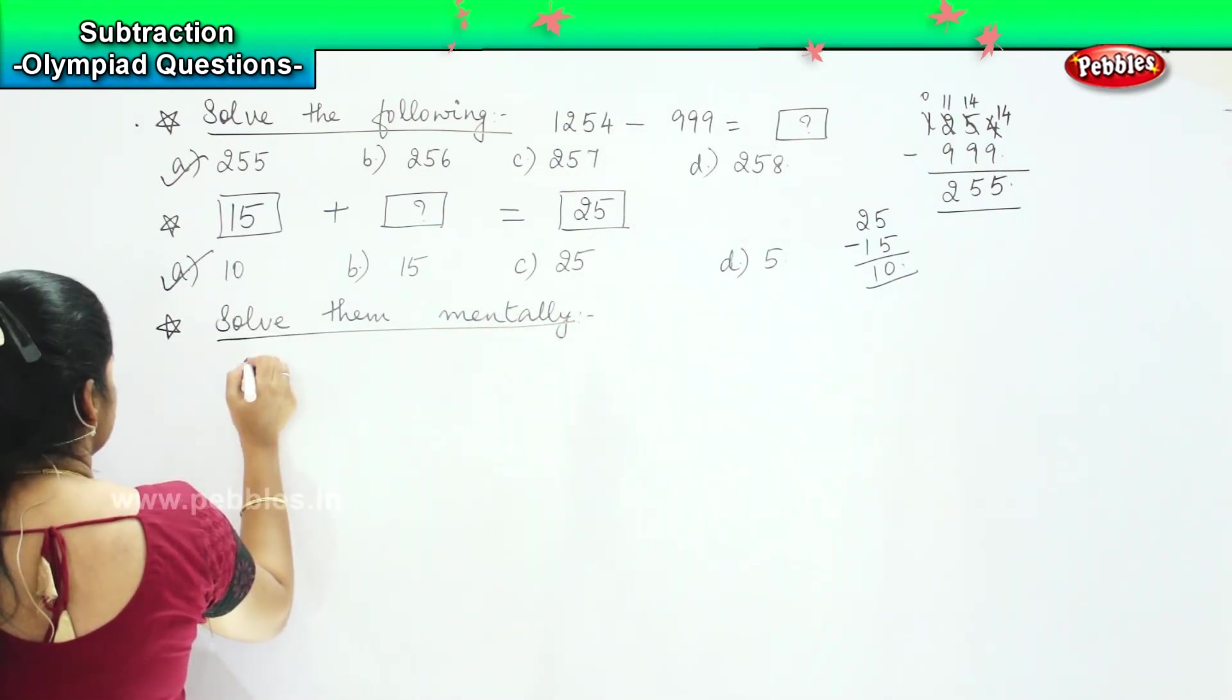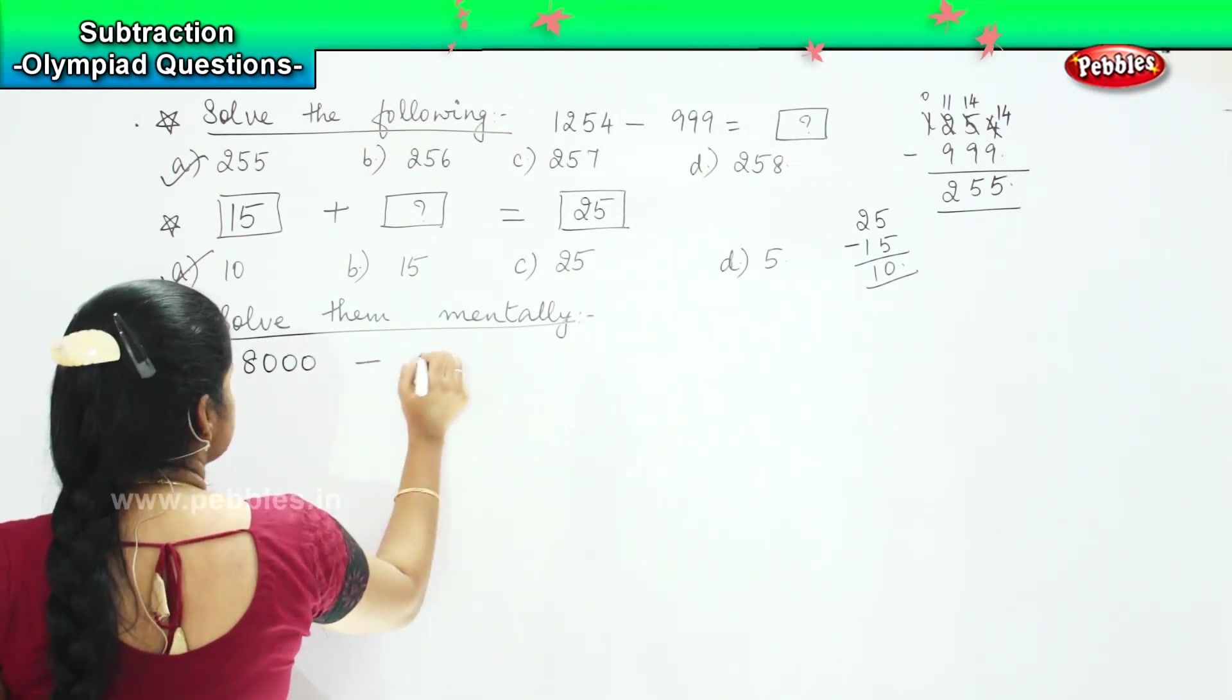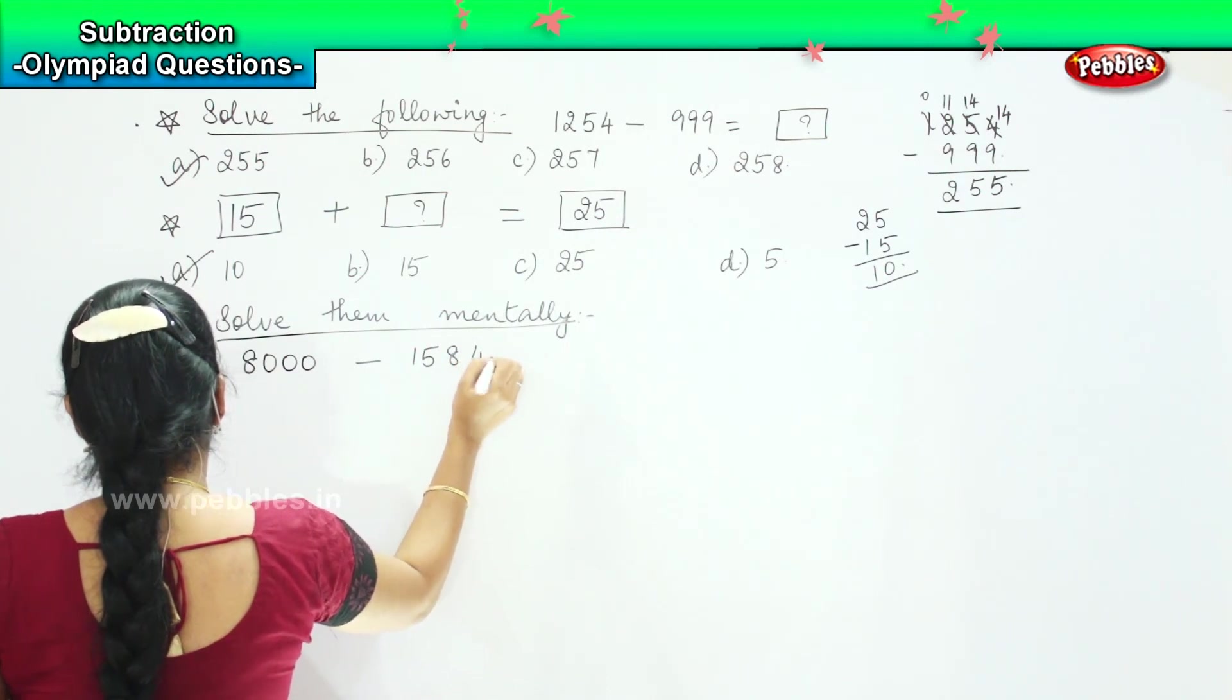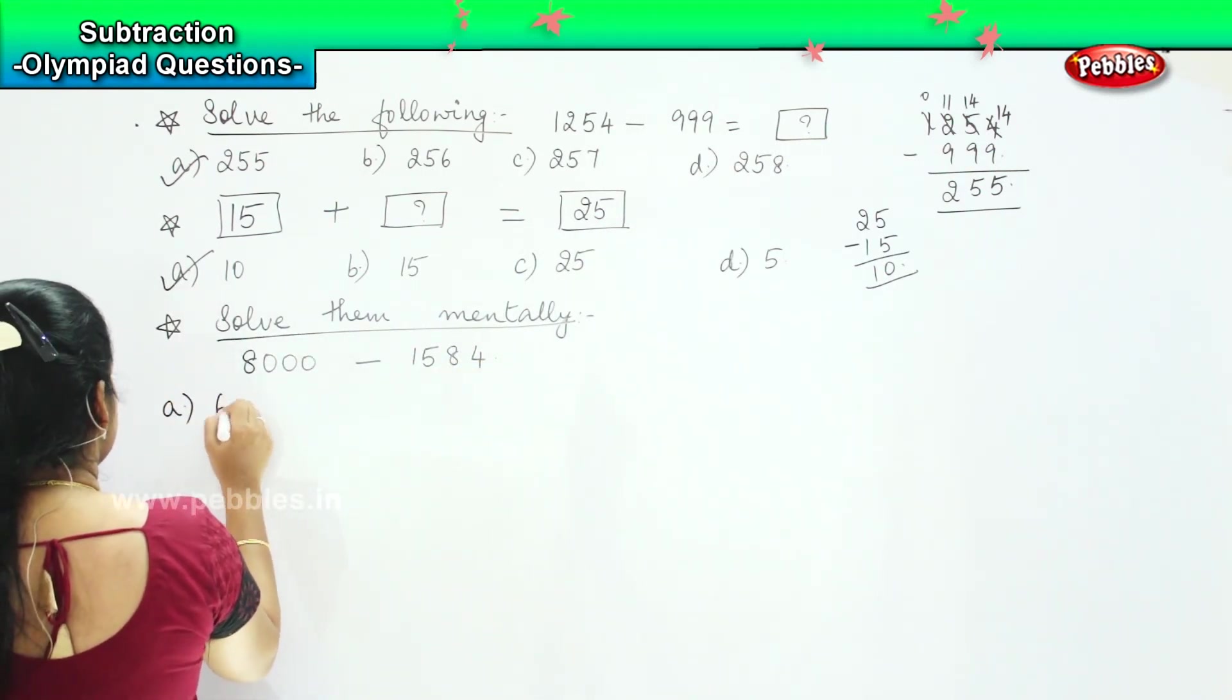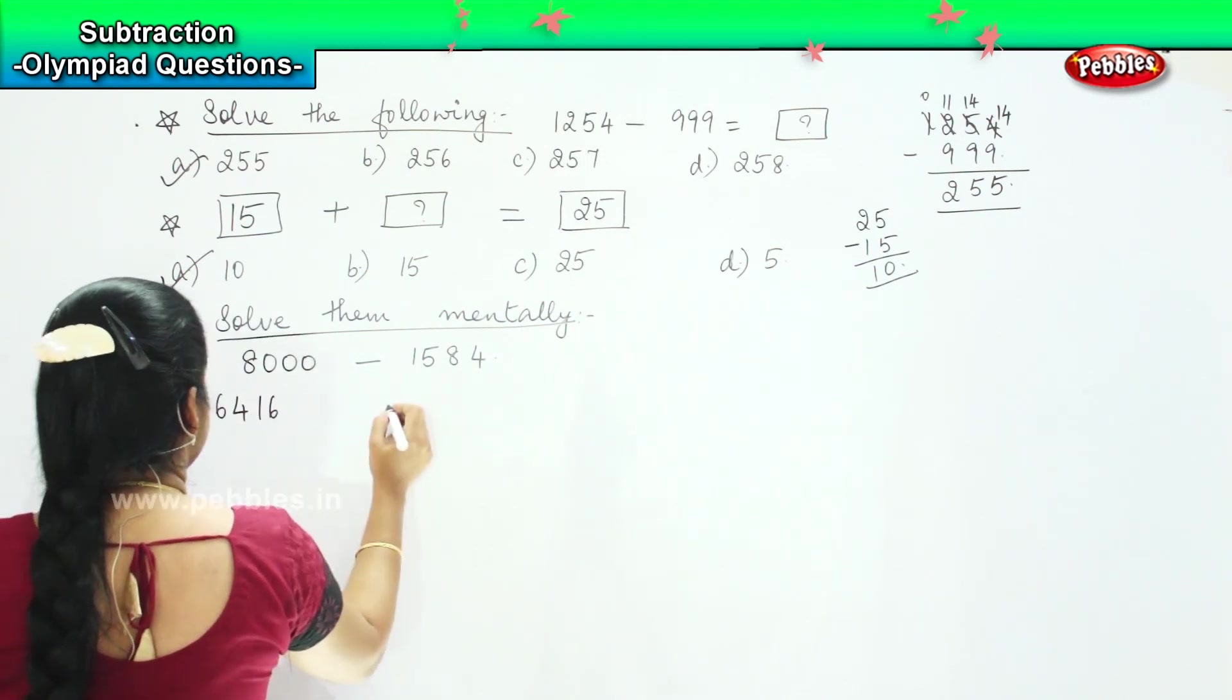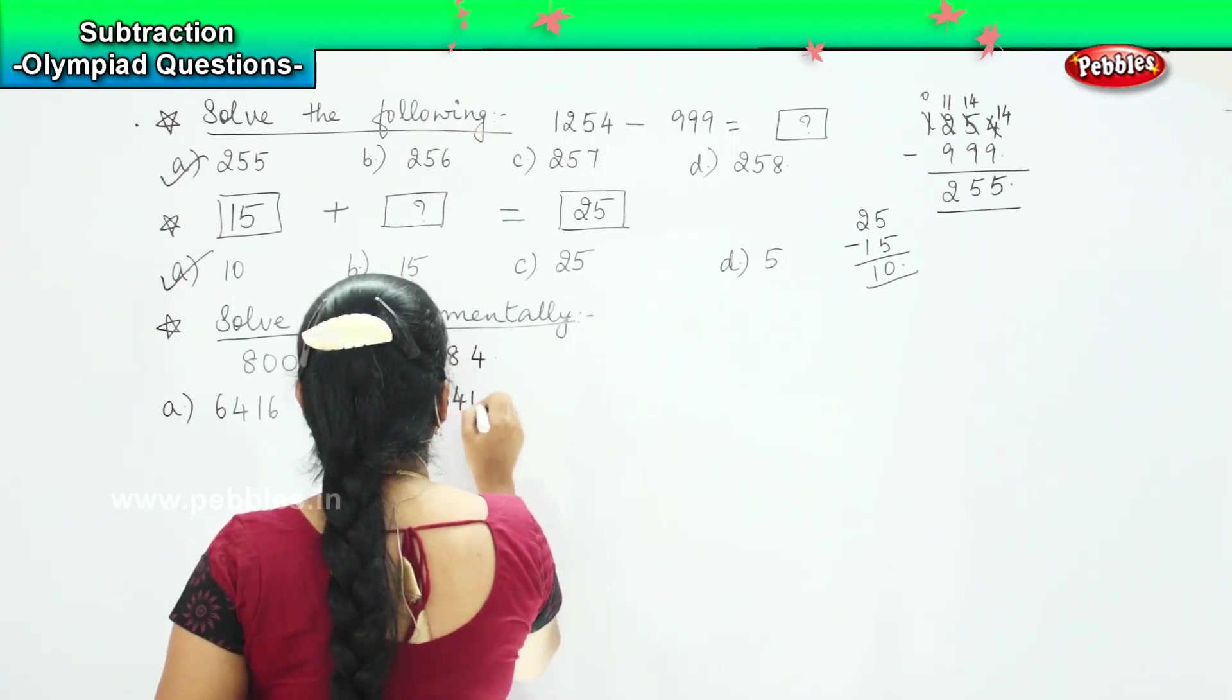The first question is 8000 minus 1584. Your options are 6416, option B 6400.